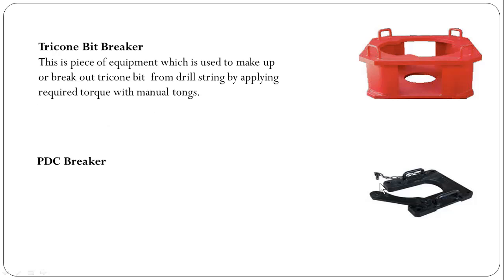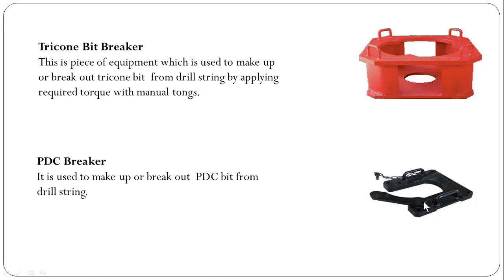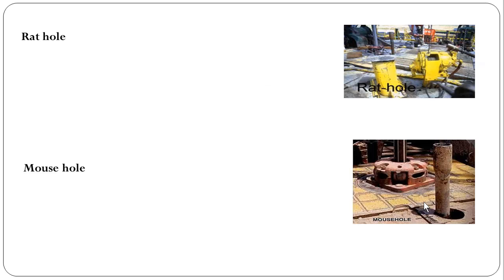Tricone bit breaker. This piece of equipment is used to make up or break out a tricone bit from the drill string by applying the required torque with a manual tong. PDC bit breaker: it is used to make up or break out a PDC bit from the drill string.